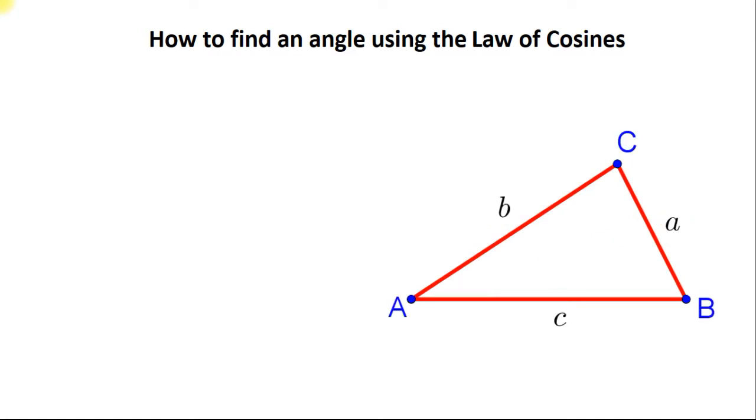Now imagine that this is the right triangle with the right angle A. In this case the side a would be a hypotenuse and two other sides would be cathety. So we can write the Pythagorean theorem for that imaginary triangle. A squared is equal to b squared plus c squared.